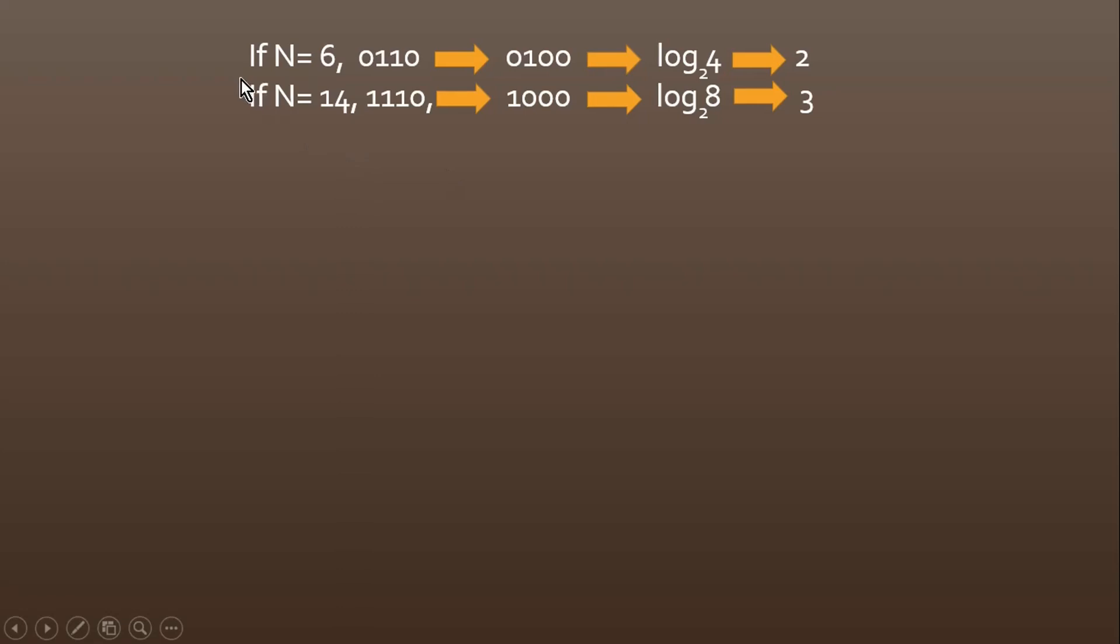Friends, so far we considered two examples. In the first example, we considered N equals 6. Let us convert this number 6 into binary. It will become 0110. Now from this number N, we need to find out 2^m, which is the nearest power of 2 less than or equal to N. To do so,